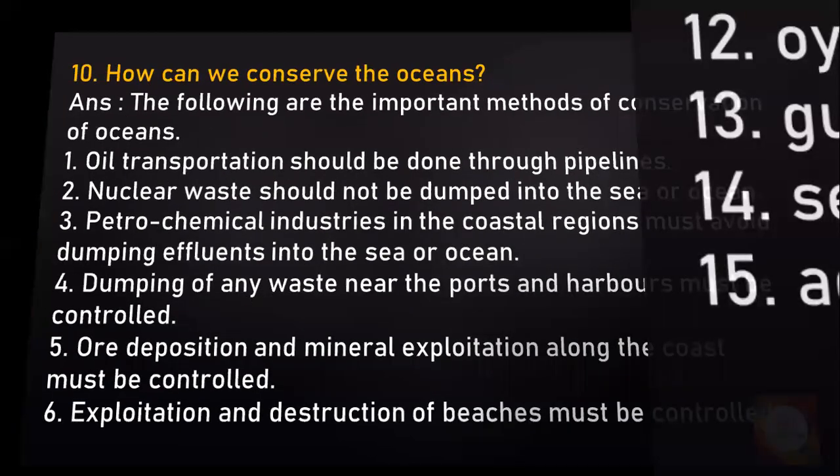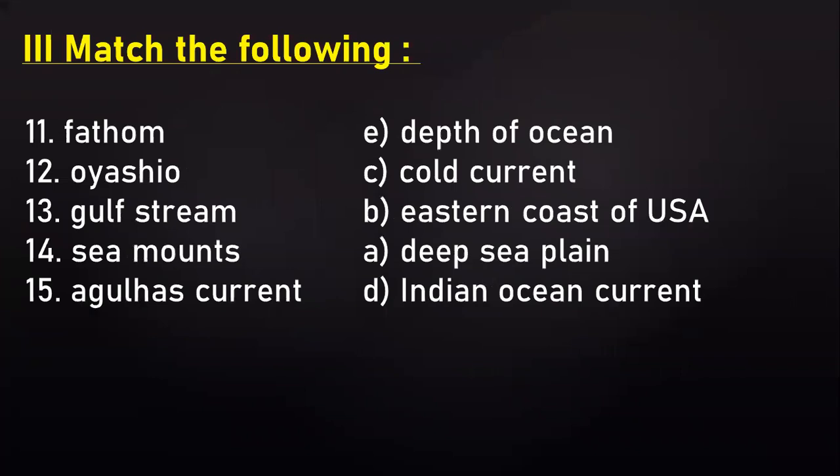Now we have match the following — the answers are written correctly in front of them. Fathom: depth of ocean. Oyashio: cold current. Gulf Stream: eastern coast of USA. Sea mounds: deep sea plain. Agulhas current: Indian Ocean current.